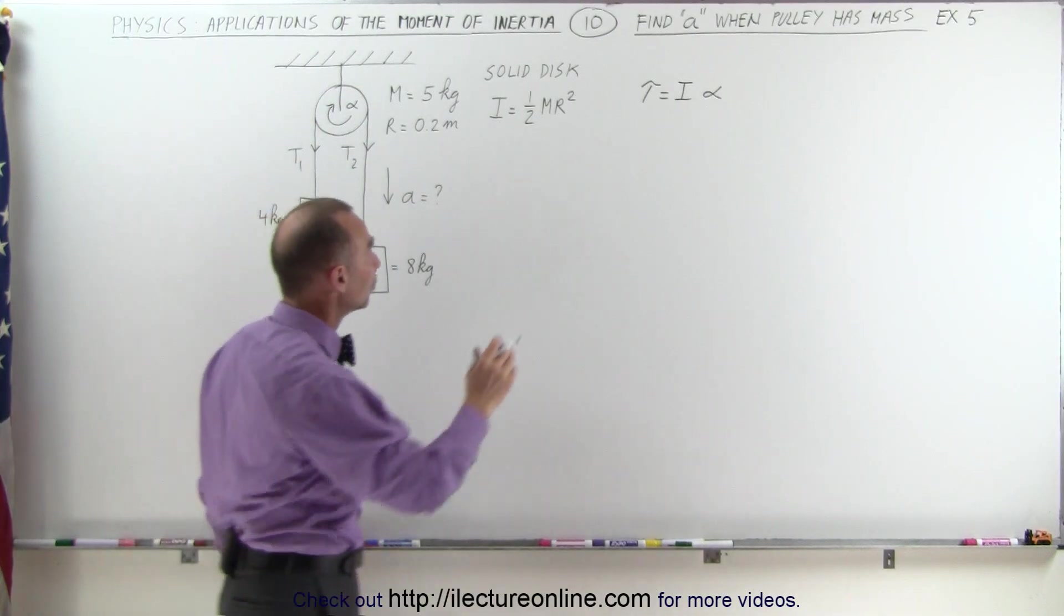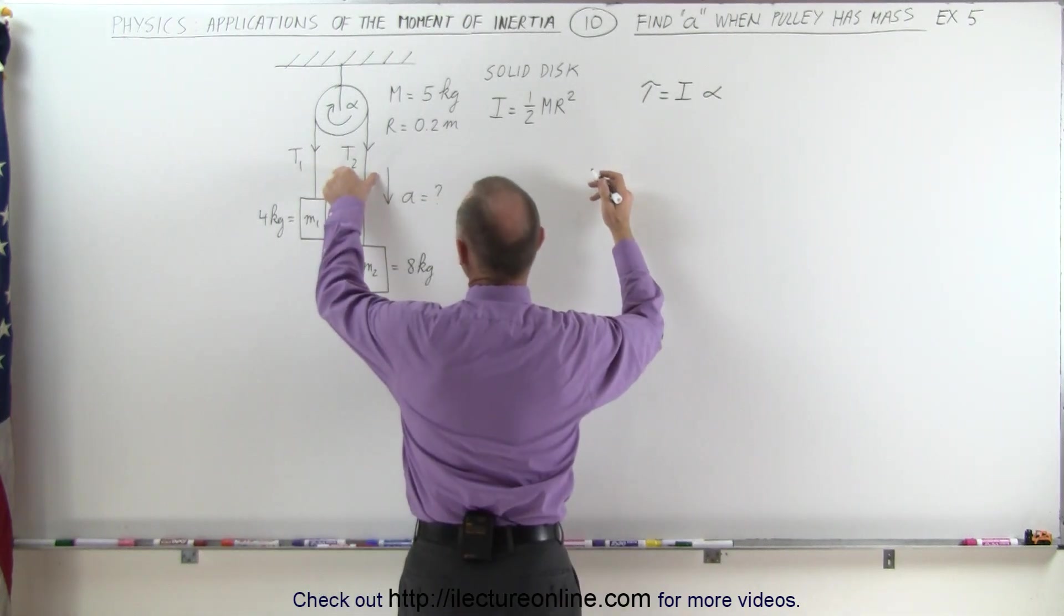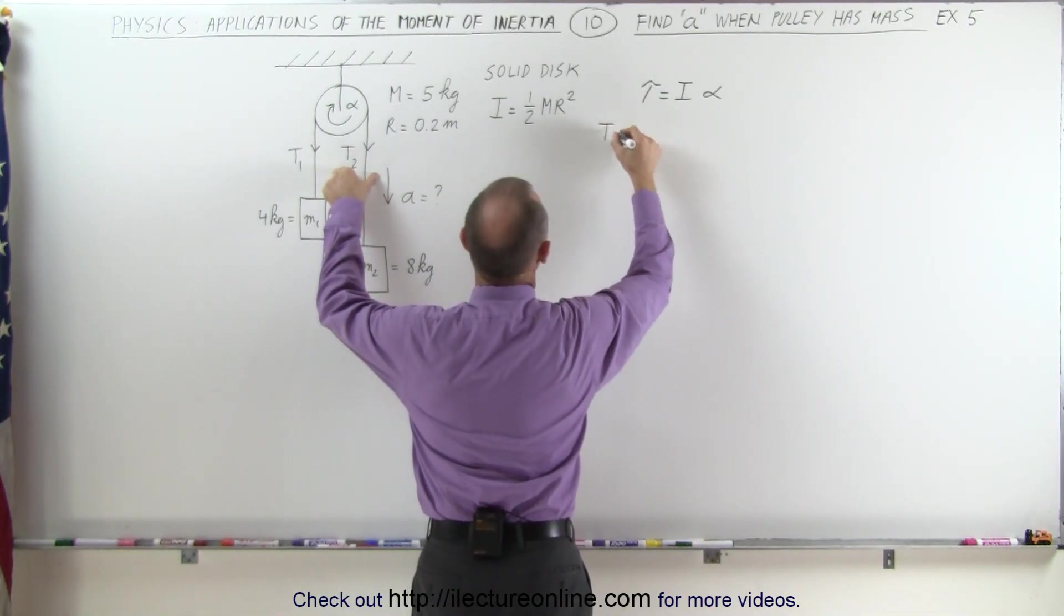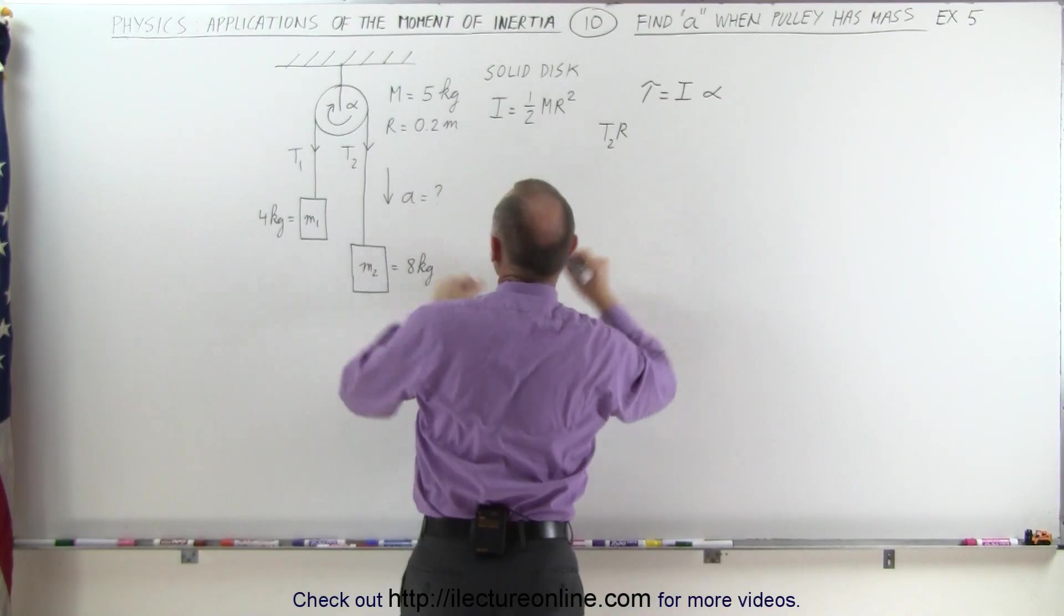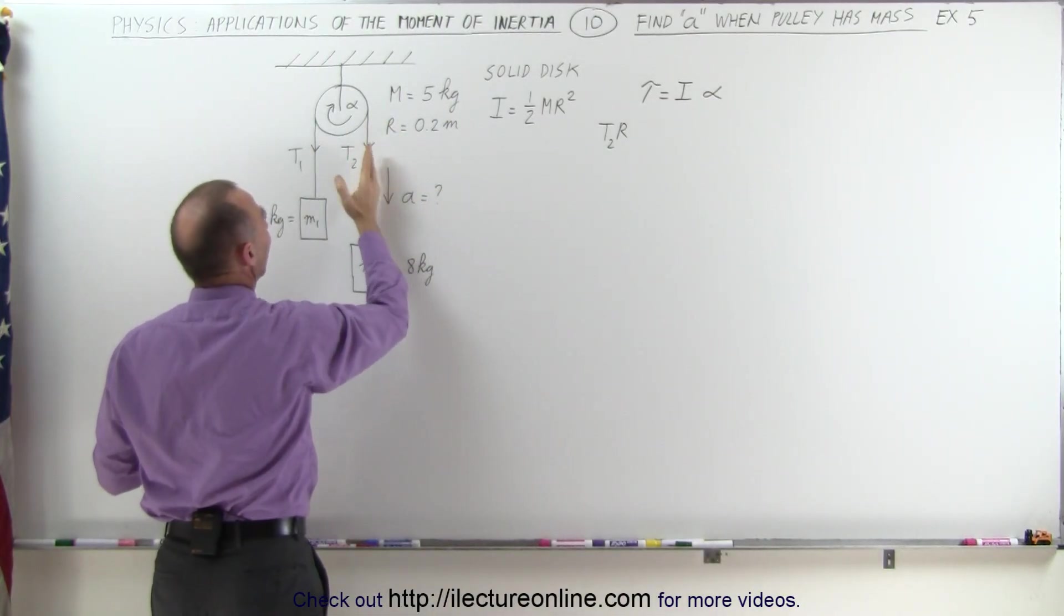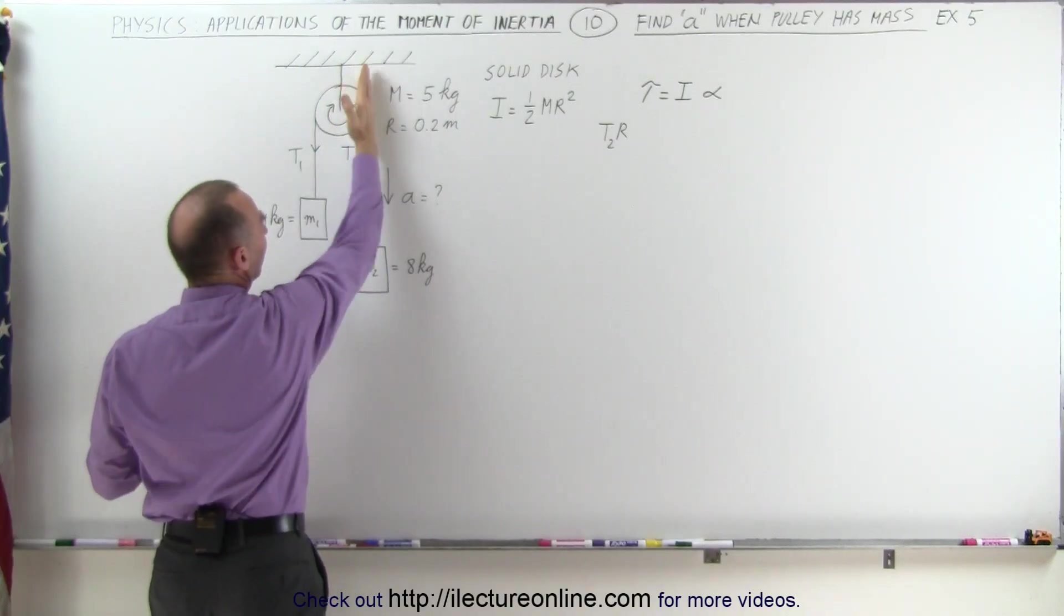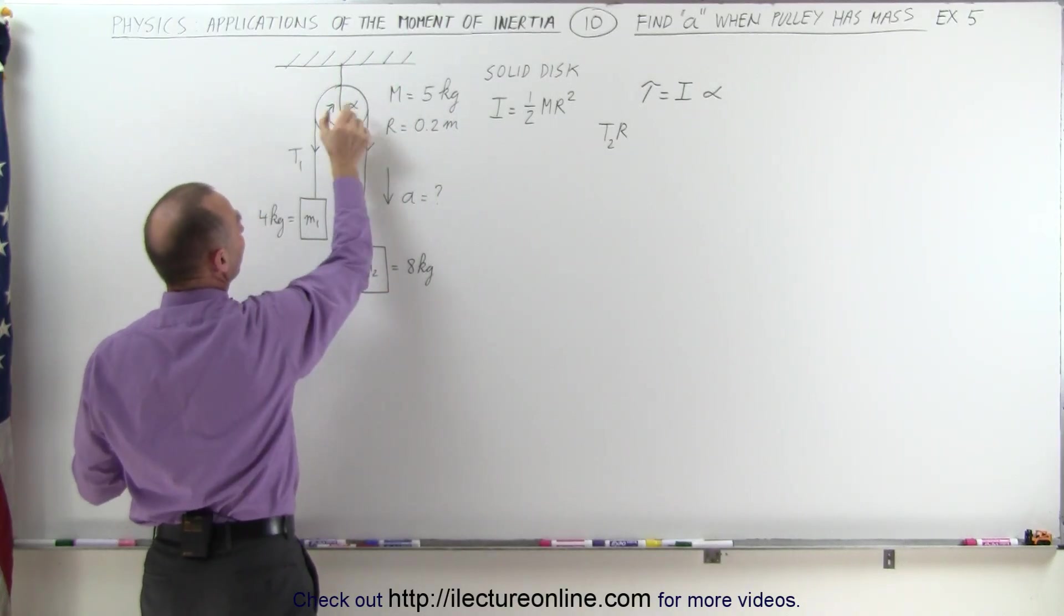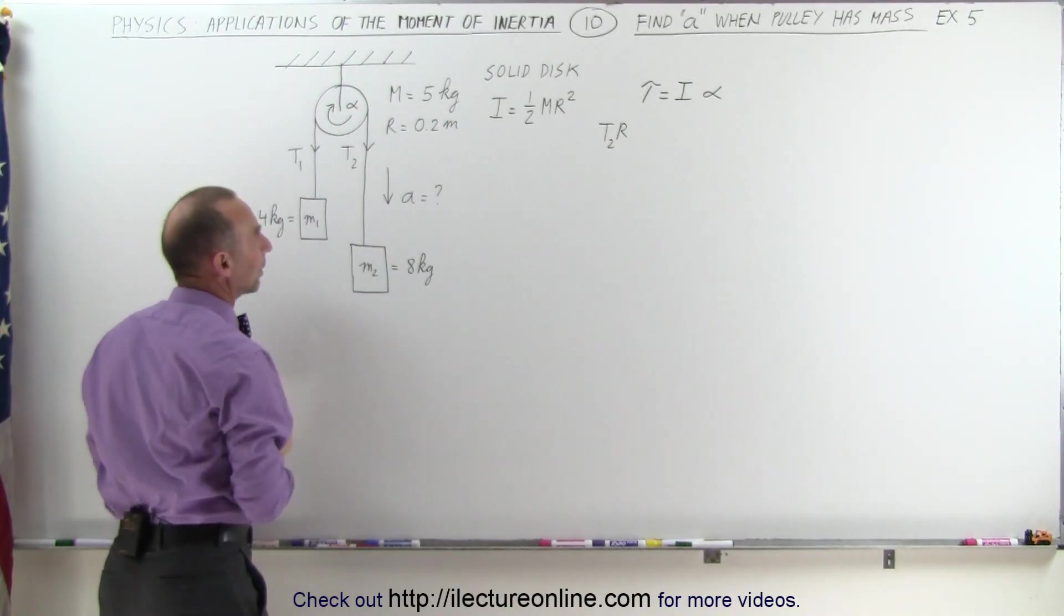The torque then will be equal to the torque aiding the acceleration, which is T2 times the radius of the pulley. Again, the torque is equal to the force times the perpendicular distance from the line of action of the force to the pivot point, which is the radius of the pulley right there.